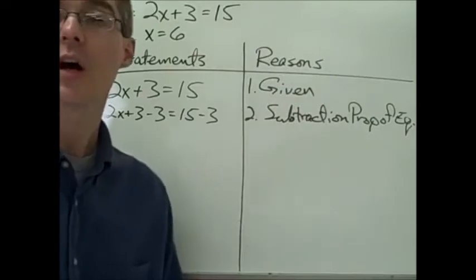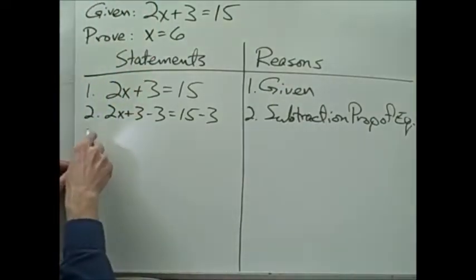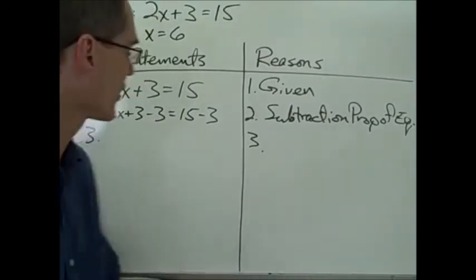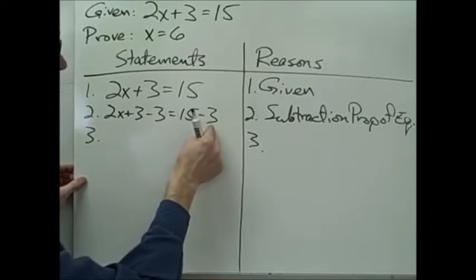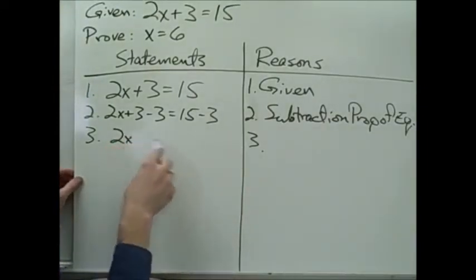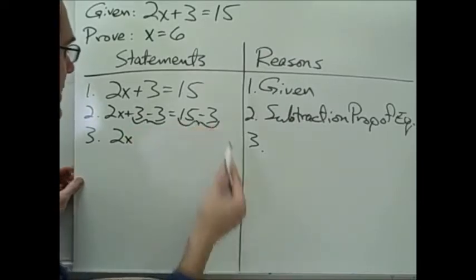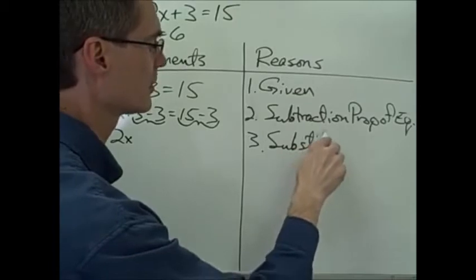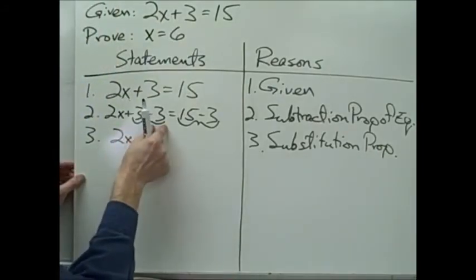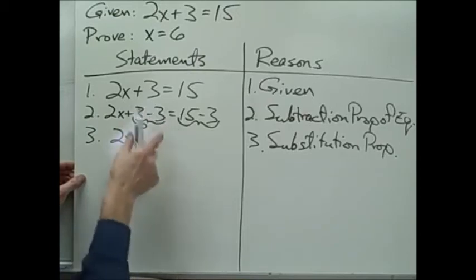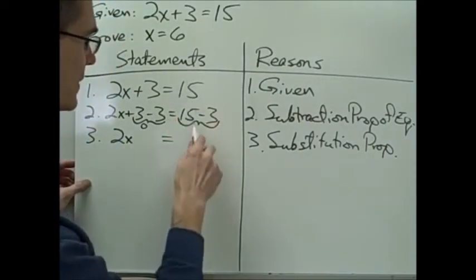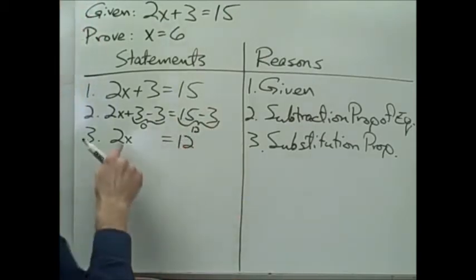Each one of our reasons will be a property of equality. For the next statement, I'd normally call this collecting like terms — positive 3 and negative 3 cancel, and 15 minus 3 becomes 12. But the reason I use here is the substitution property of equality: I substitute 0 for the quantity 3 minus 3, and substitute 12 for 15 minus 3. So I have 2x equals 12.